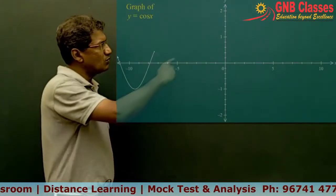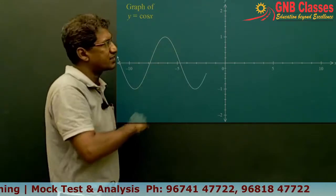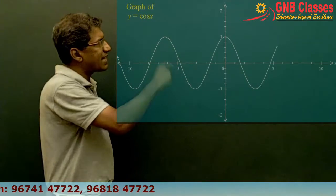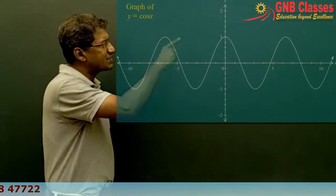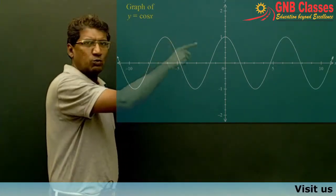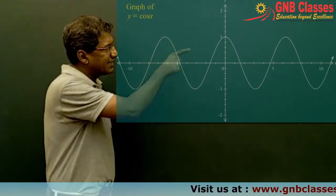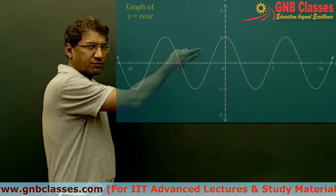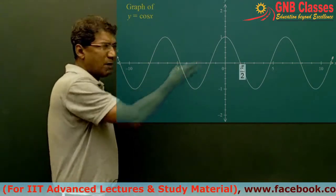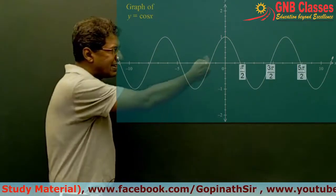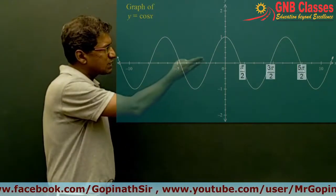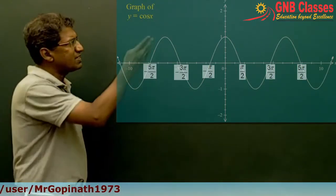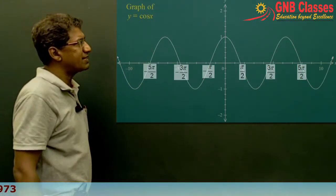The next basic graph is y = cos x. It looks similar to the sin x graph but with a difference: the sin x graph intersects the x-axis at π, 2π, 3π, whereas the cos x graph intersects the x-axis at π/2, 3π/2, 5π/2, and in the negative direction at −π/2, −3π/2, −5π/2, and so on.